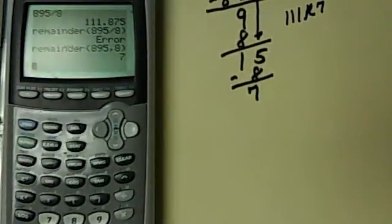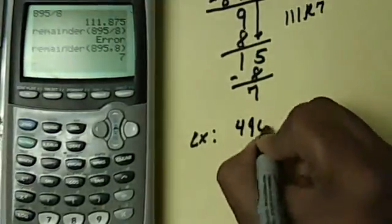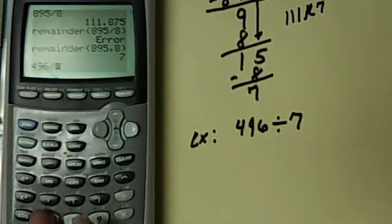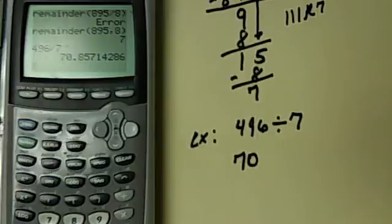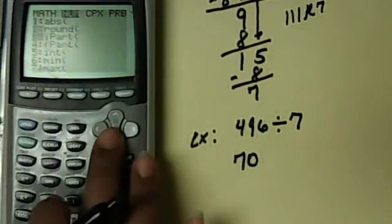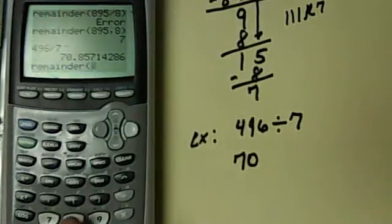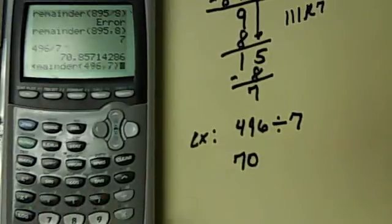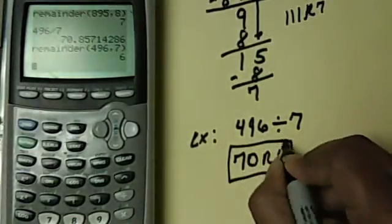Let's do one more example. This time I'm not going to do the long division — I'm just going to have 496 divided by 7. I'm going to take 496 and divide it by 7. My first answer, the whole number part, is 70. Then I'm going to go to Math, Num, scroll down to Remainder, or I can hit 0, and hit Enter. Again, I'm going to put in 496 comma 7, close my parenthesis, and I'm going to get remainder 6. The correct answer is 70 remainder 6.